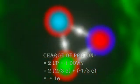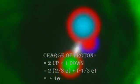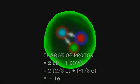If we add up the charges of all three quarks of the proton, we get one positive elementary charge, which is the charge of the proton.